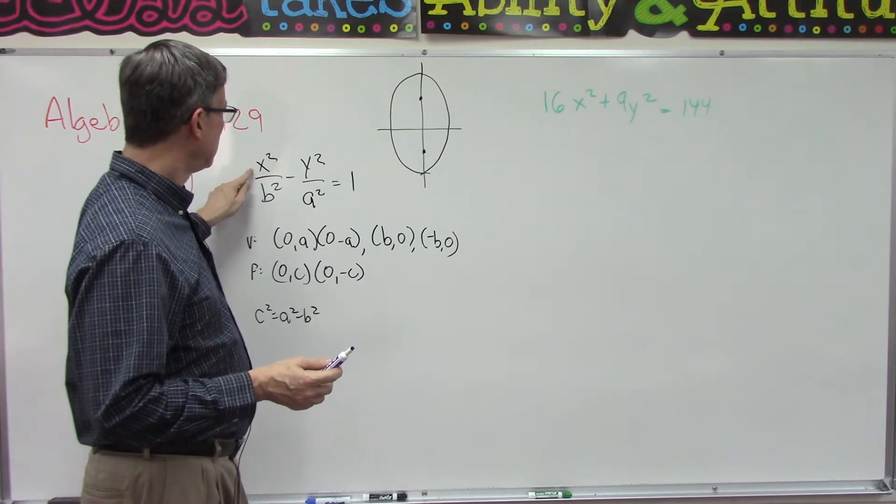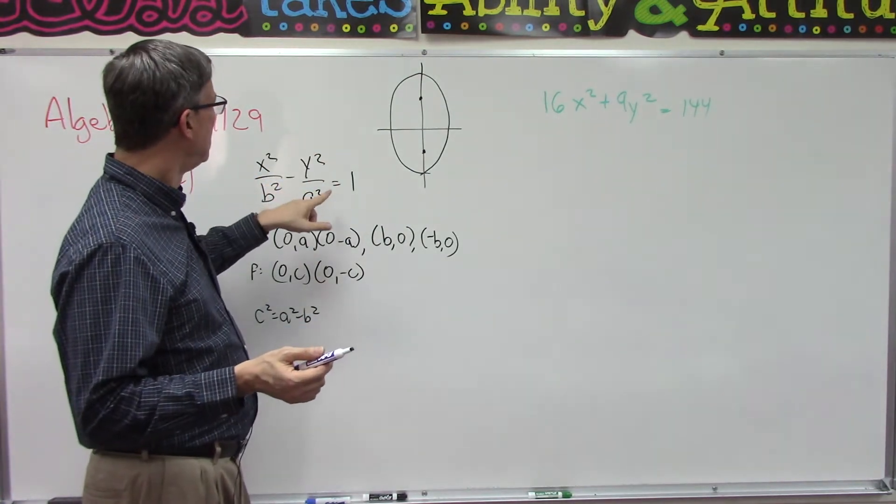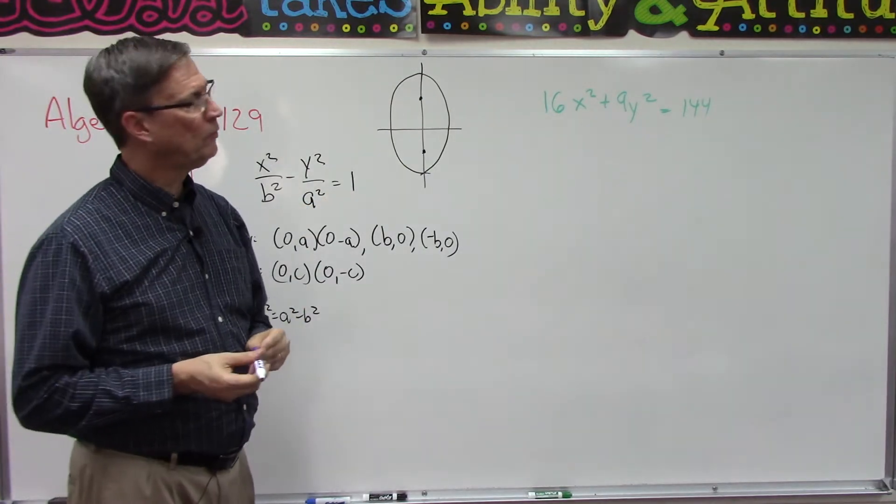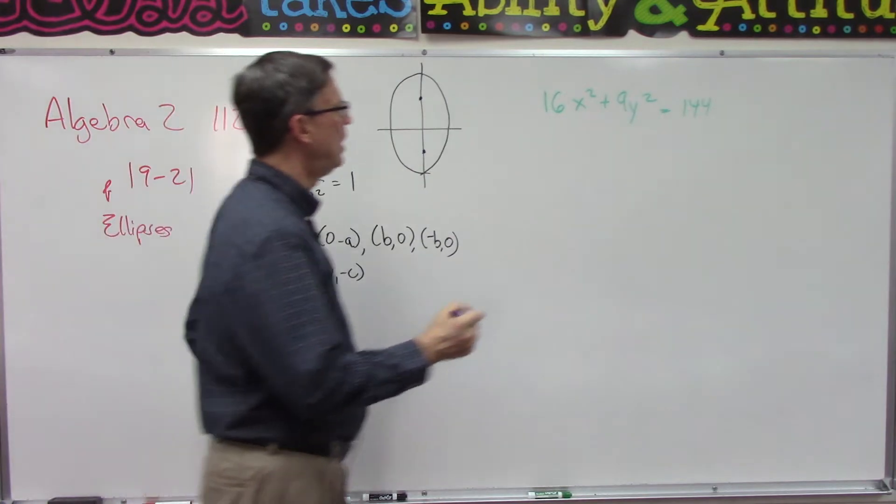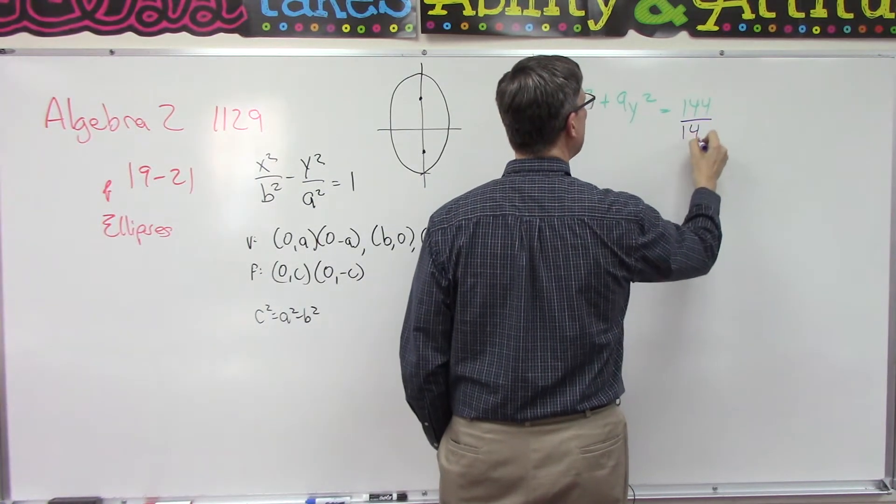We have an x squared and a y squared term, but we want to set this equal to one. The way we make it equal to one is we divide both sides by whatever this number is.